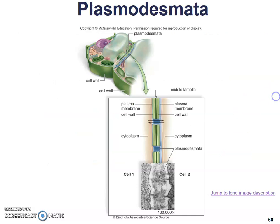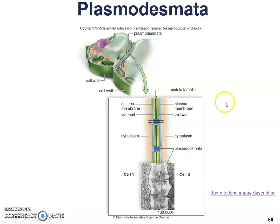Here we have a diagram showing the plasma membrane and then the cell wall. This is a cross-section — like looking down through a cell — and here we have the plasmodesmata that allow cells to communicate with each other. And that's it!